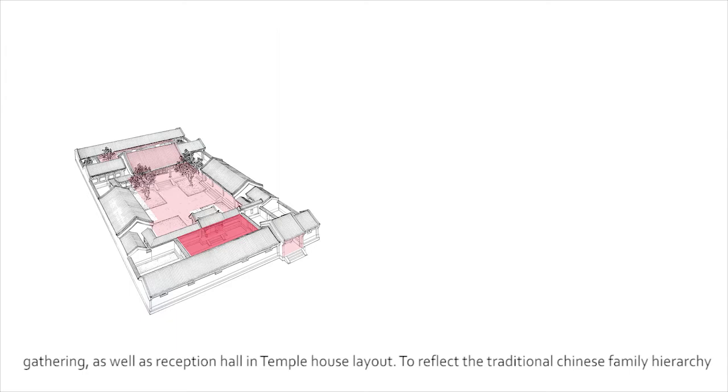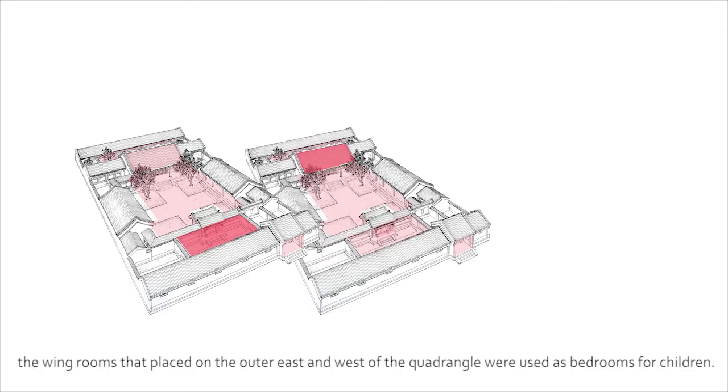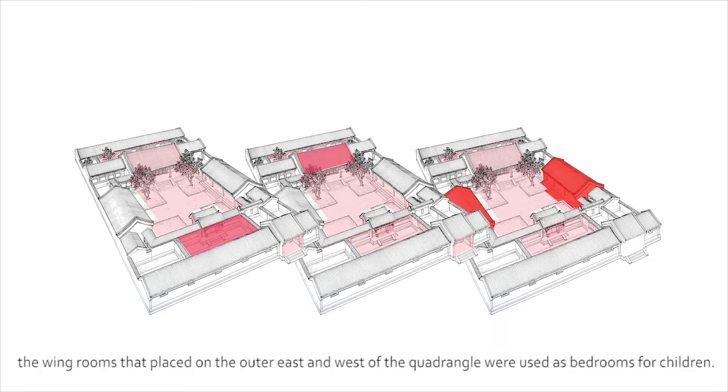To reflect traditional Chinese family hierarchy, the wing rooms placed on the outer east and west of the quadrangle were used as bedrooms for children.